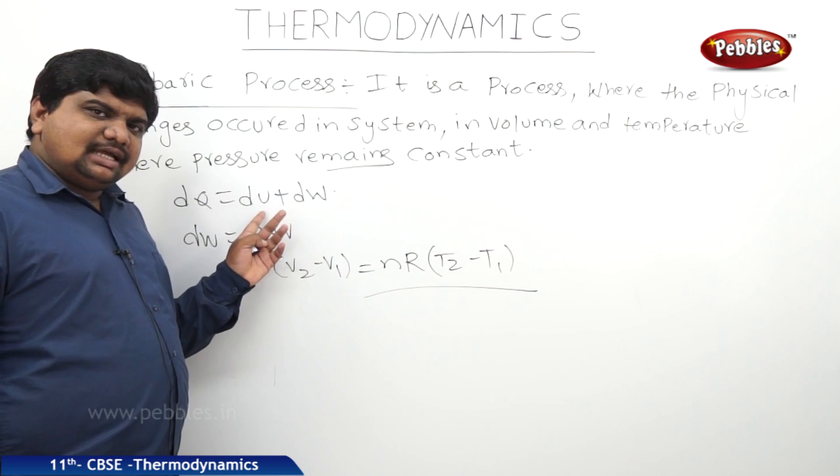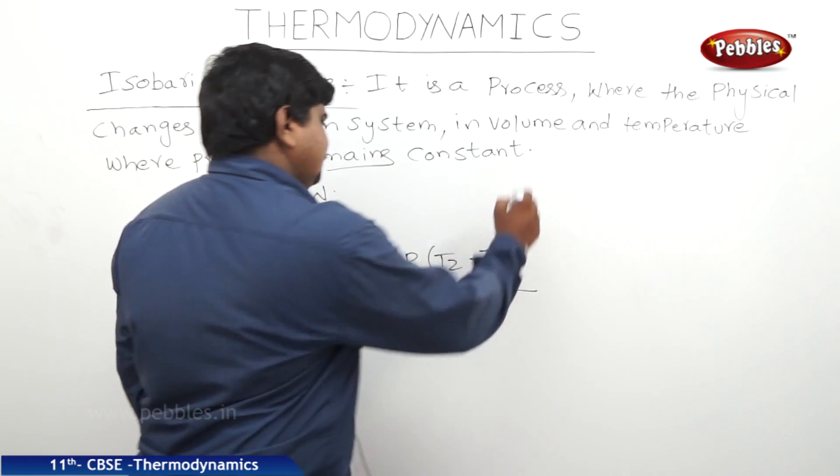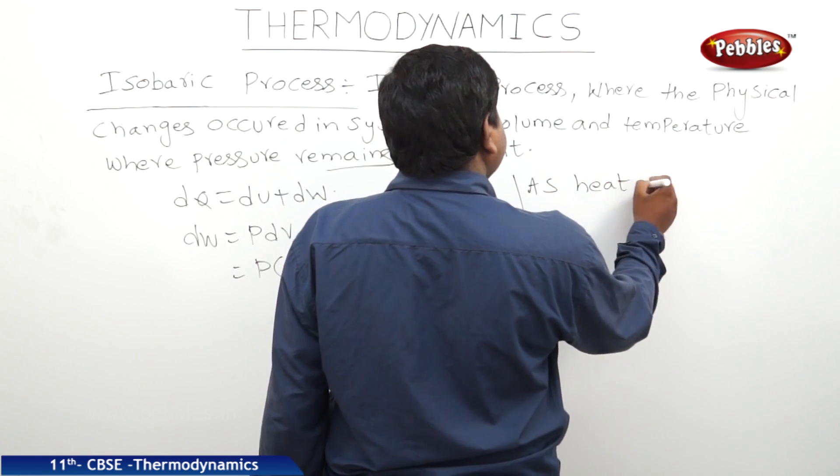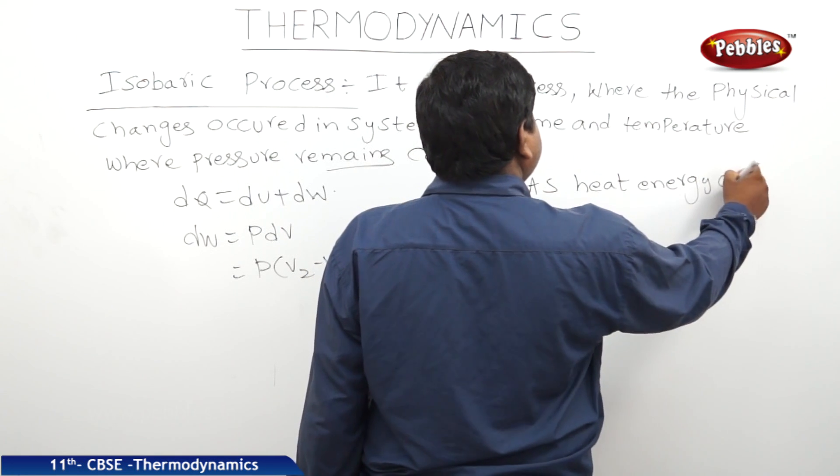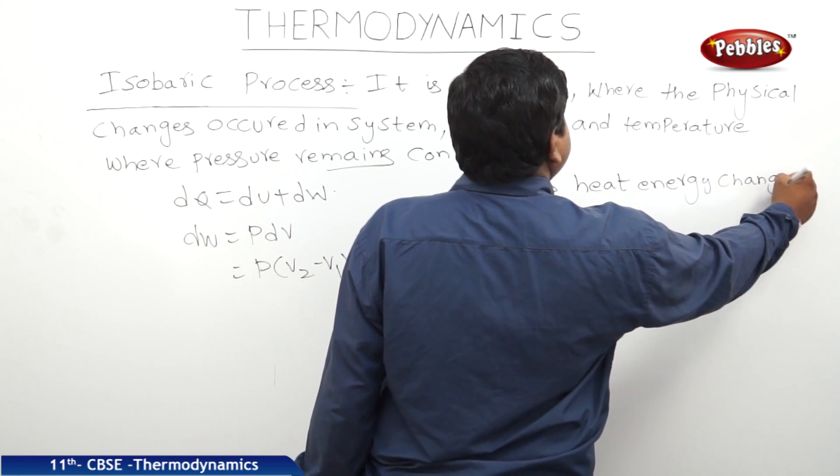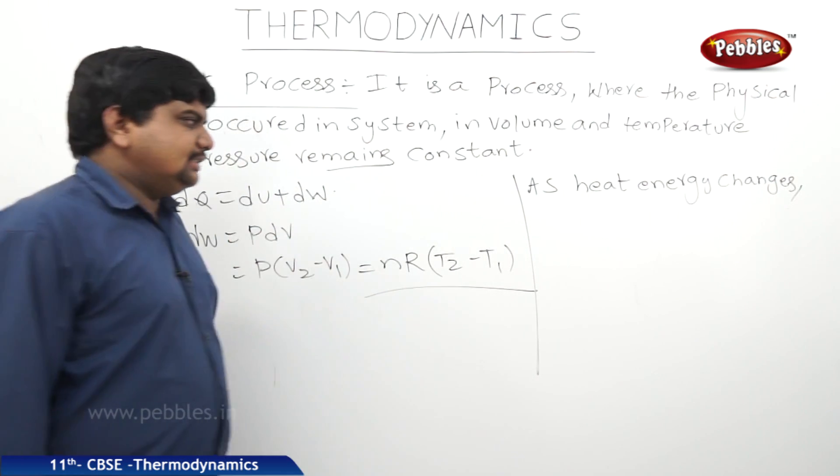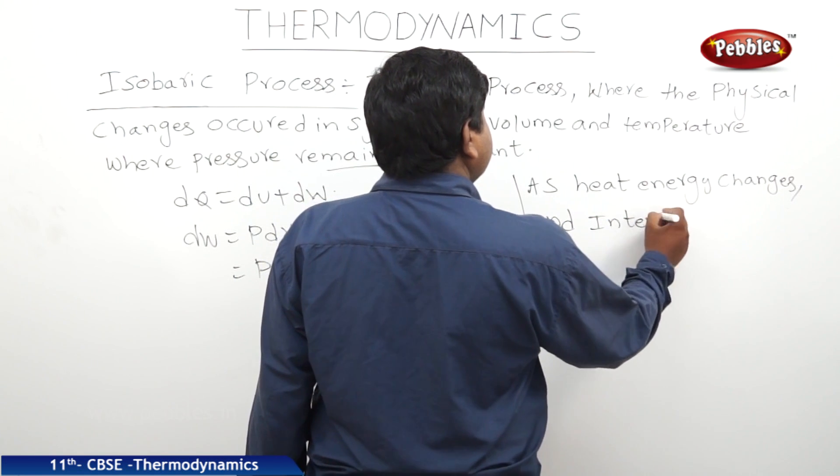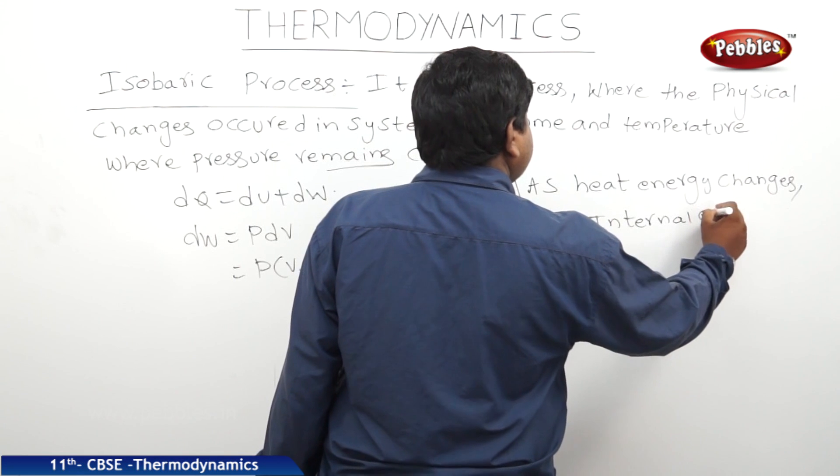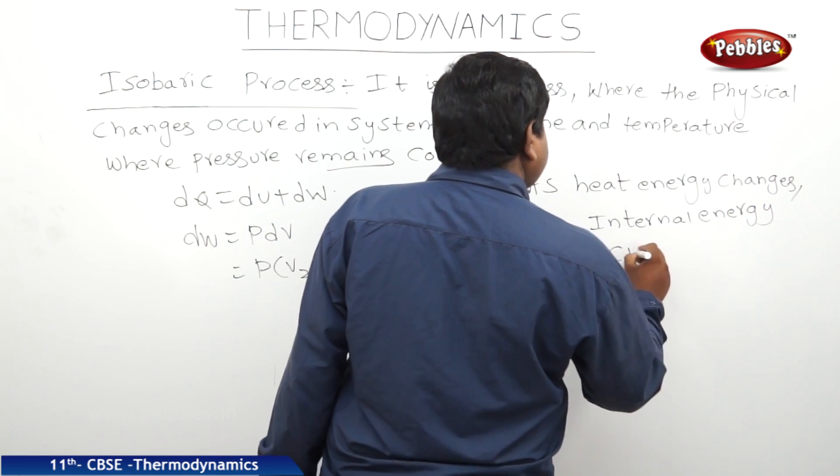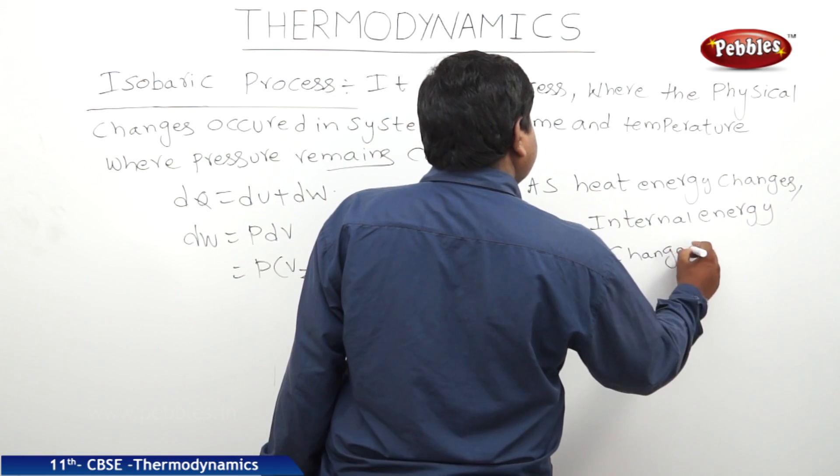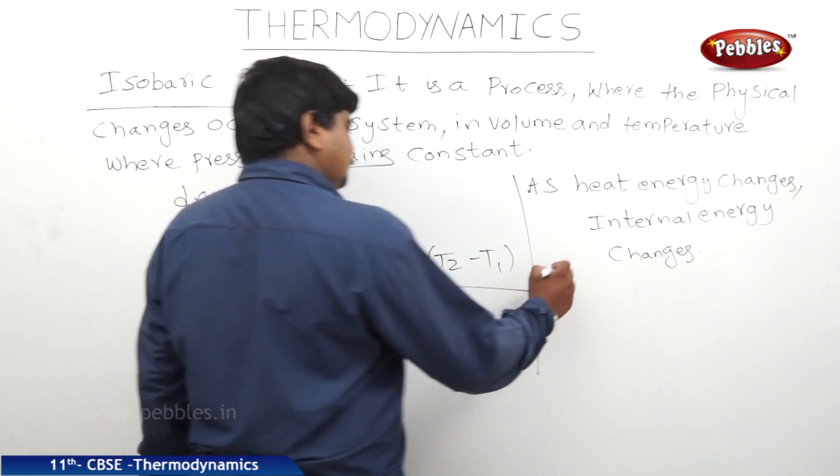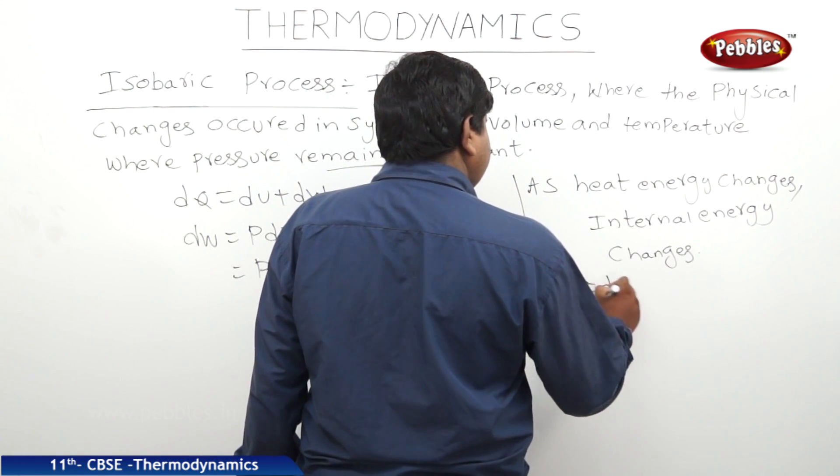As the temperature changes, the internal energy changes. As heat energy changes, the internal energy changes. Because the work done is fully dependent on dW equals PdV, therefore we can say dQ equals dU.